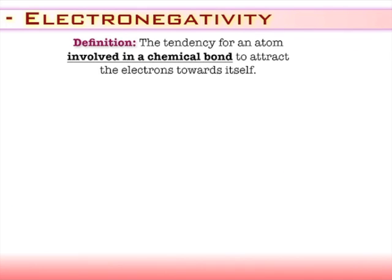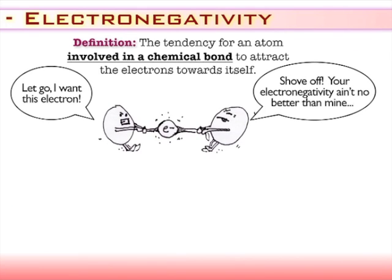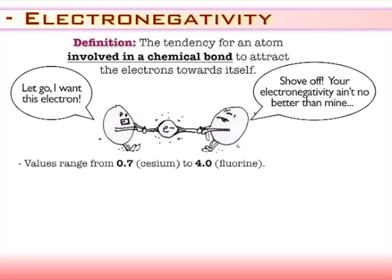Electronegativity is going to sound a lot like electron affinity, and it's very similar. The big difference is that this deals specifically with a chemical bond — the pull, the desire for an atom within a chemical bond to pull electrons towards itself. It's a much simpler concept because it's measured all in positive values, from 0.7 being the weakest to 4.0 being the strongest — cesium to fluorine.